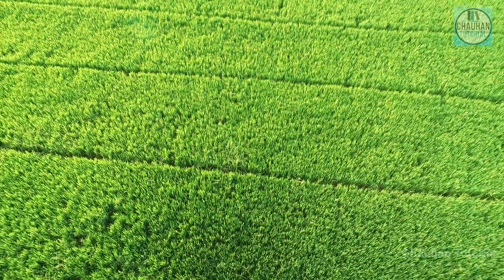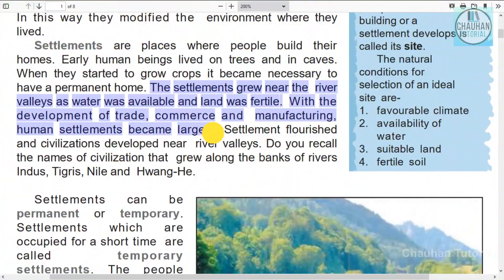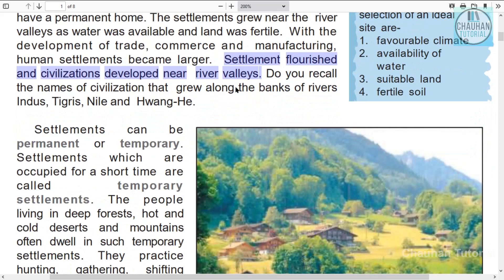Gradually, trade and commerce grew, and with the arrival of the machine age and inventions of machines, human settlements became larger. Settlement flourished and civilization developed near river valleys. Most settlements and civilizations developed around river valleys.